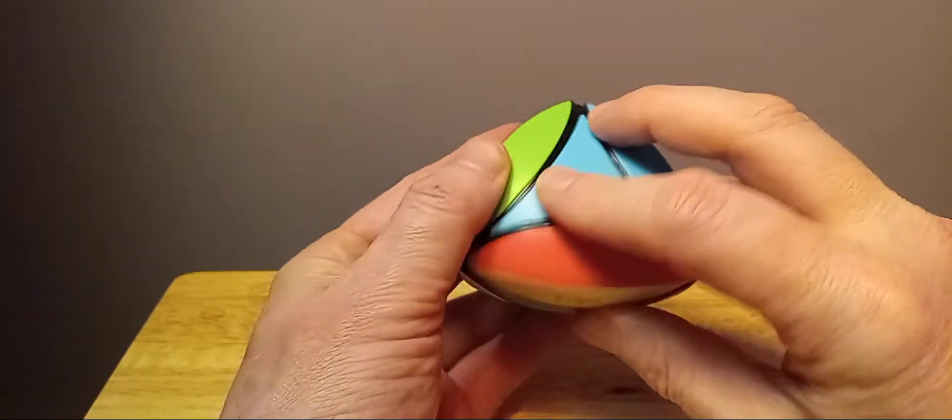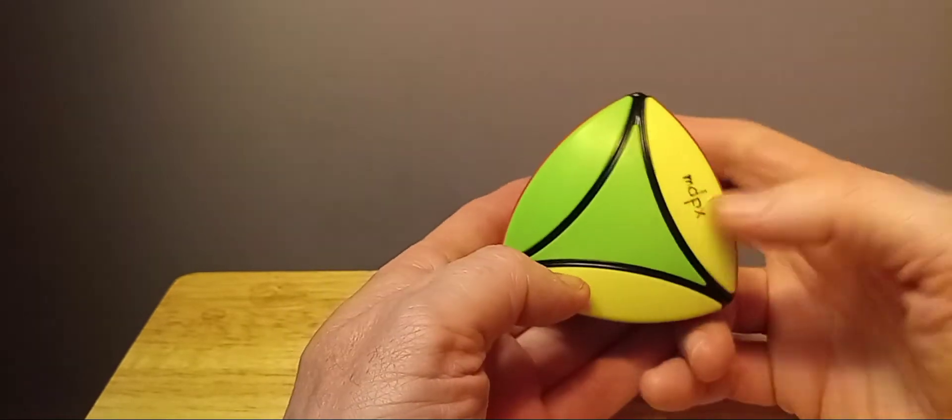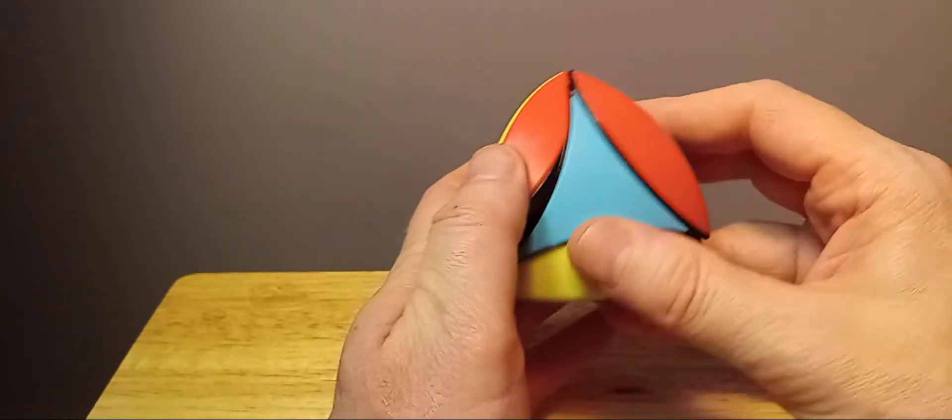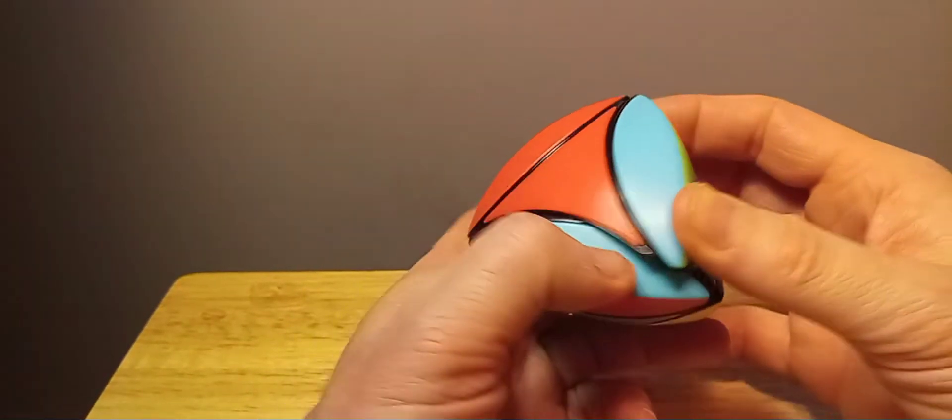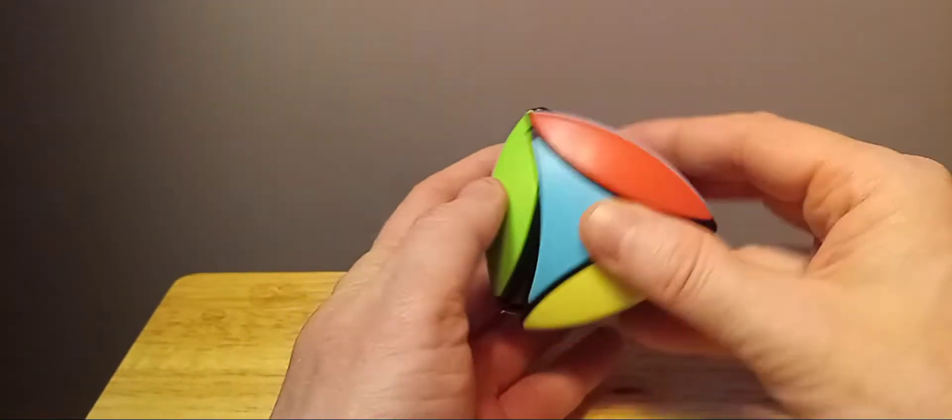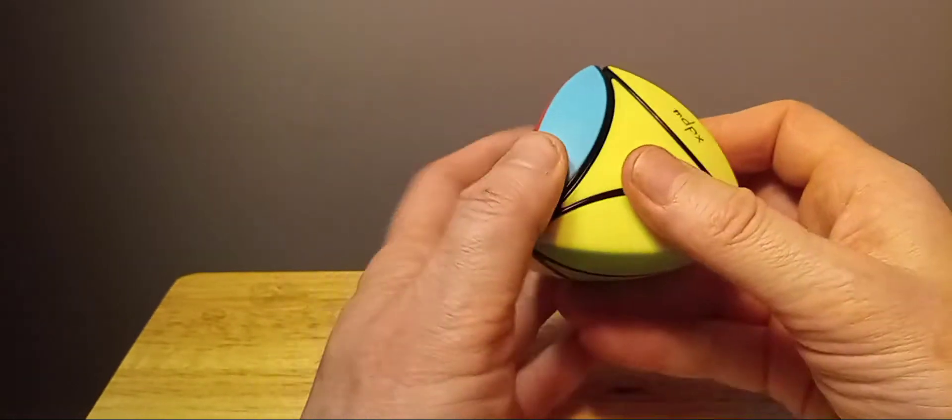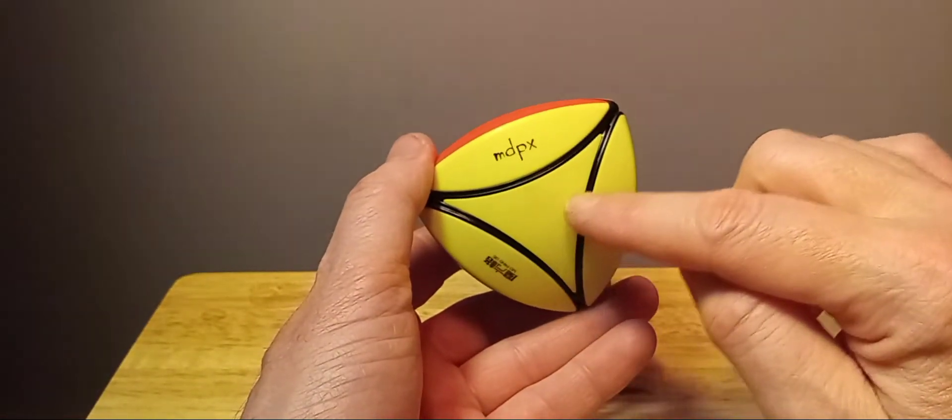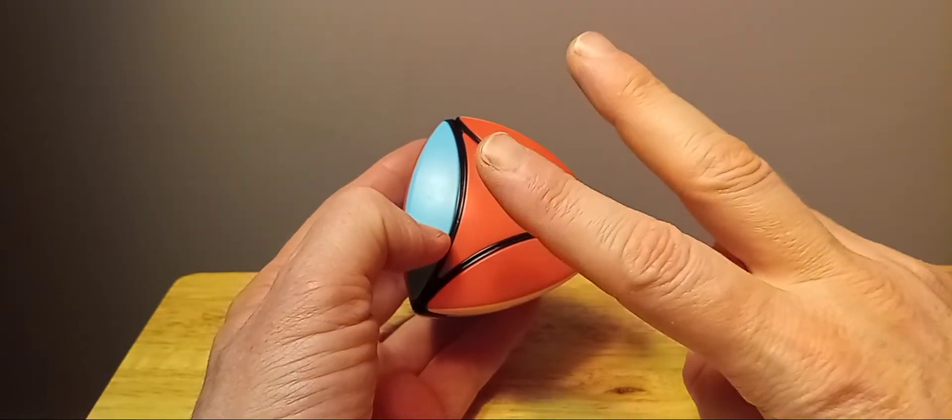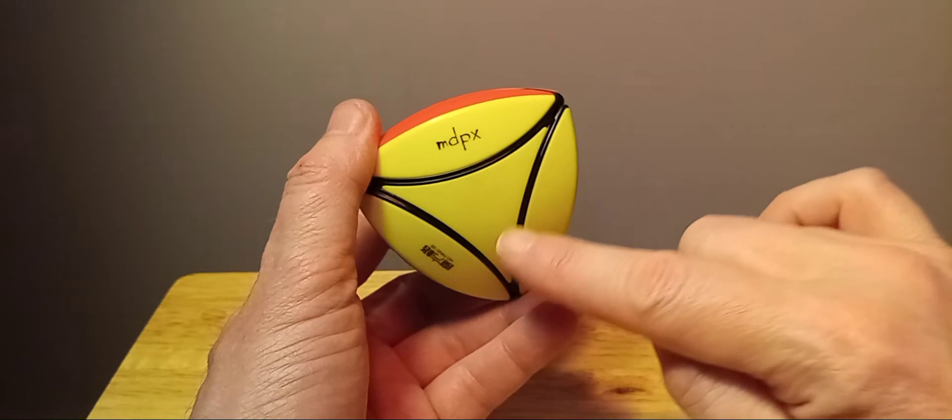And then, you just start where you left off, right in the same spot. Do the sune algorithm, right, up, right invert, up, right, and then up, and then right invert. So that's what you want to do. You want to make sure you do the sune algorithm two times. You do that move two times to make sure the center gets back down here.